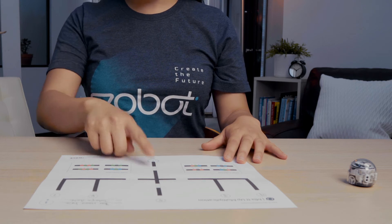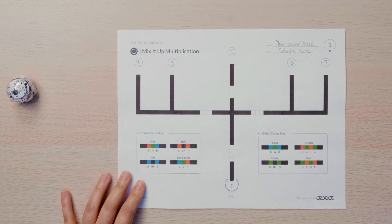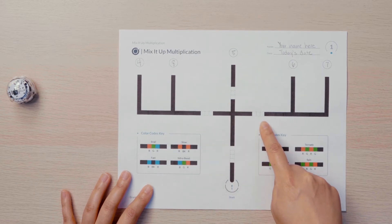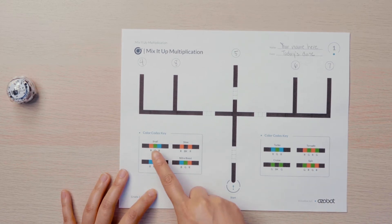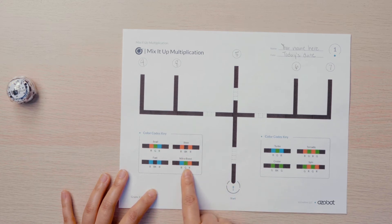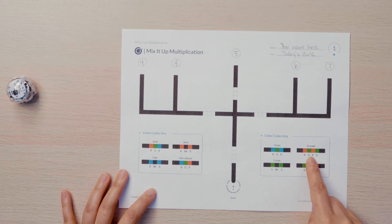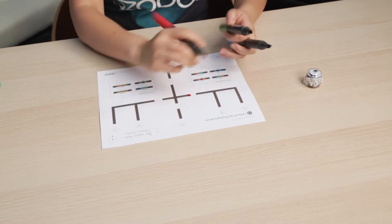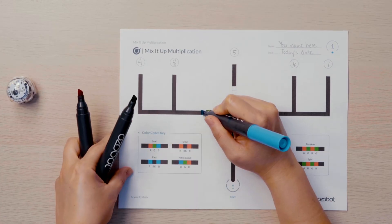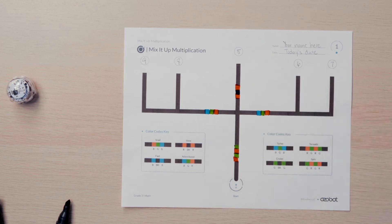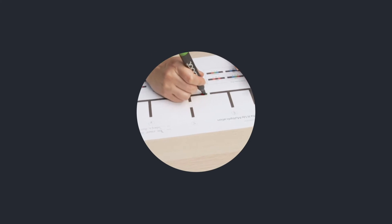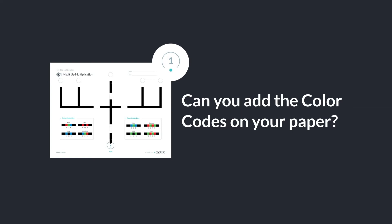Now it's time to move on to the missing color codes. Look at your map. You will notice that there are 4 missing color codes on the pathways that Ozobot will travel. If you see a sequence of 3 blocks, a speed color code is missing. If you see a sequence of 4 blocks, a cool moves color code is missing. On my map, I will use Snail, Slow, and Nitro Boost to program my bot to change speed. I will also use Tornado to program my bot to spin around in a circle. It's your turn to use your color code markers to add your own color codes to complete each pathway.